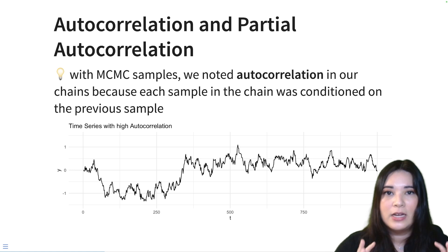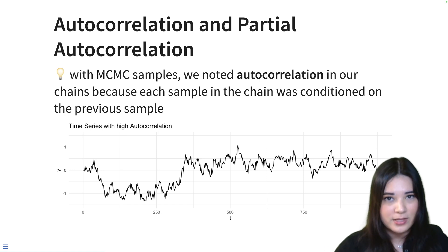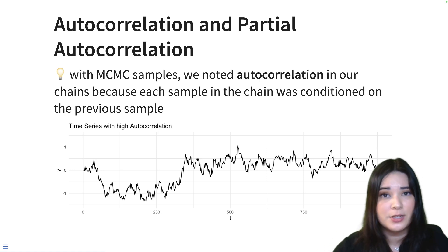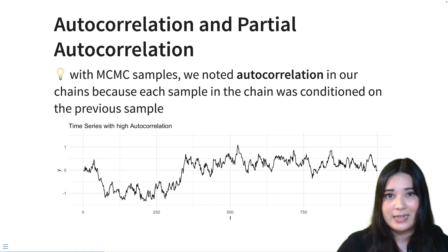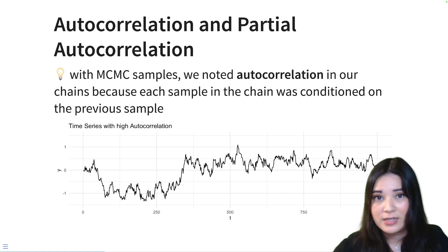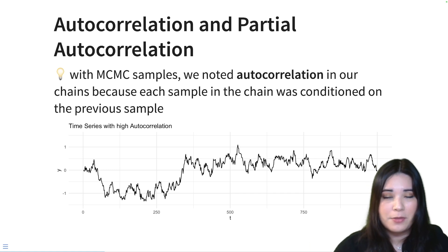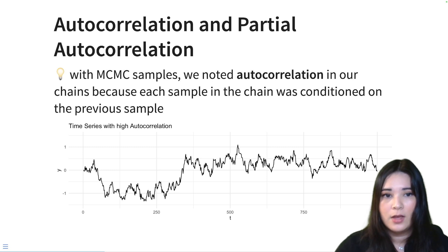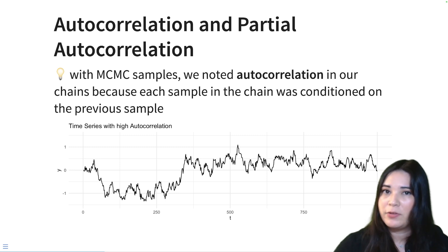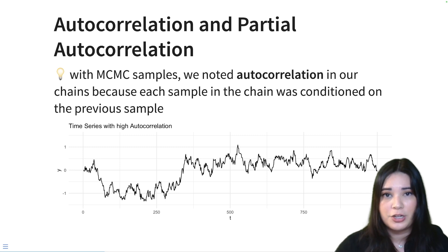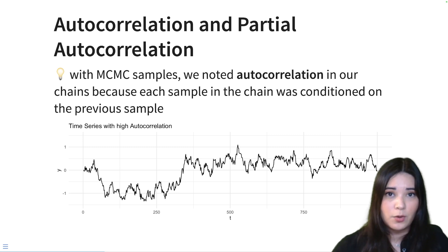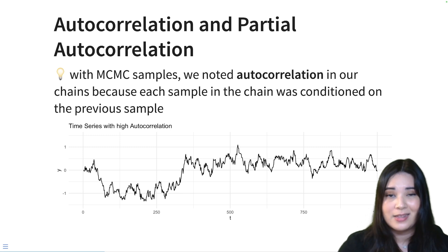Now that we have the basics down, let's talk about a few building blocks that will help us understand actual time series models — models that help us understand the data in time series or even forecast it into the future so that we can do things like plan the budget for a business. The first couple of terms we need to get familiar with might already be familiar: autocorrelation and partial autocorrelation.